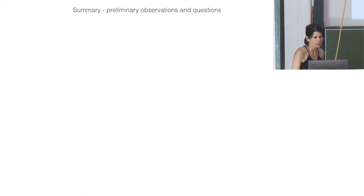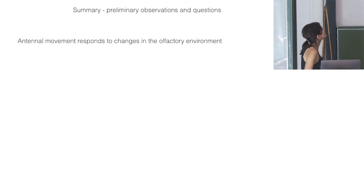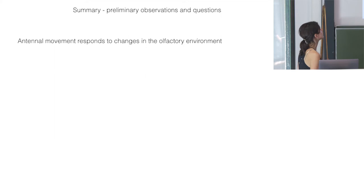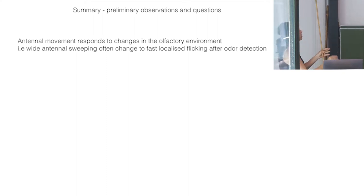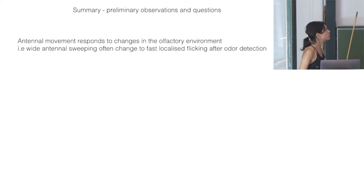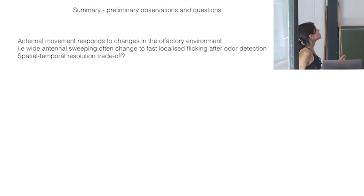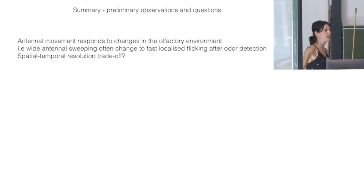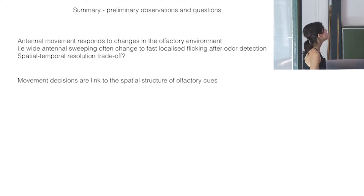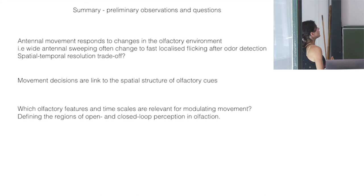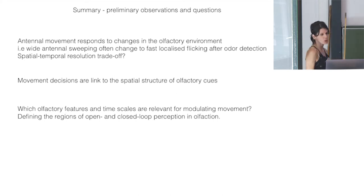This is all work in progress, but so far: antenna movement responds to changes in the olfactory environment. We see wide antenna sweeping shift to fast localized flicking after odor detection and after odor elimination — perhaps the animal scans until it detects an odor, then stays on that location with higher flicker activity to perceive it better. Movement decisions are linked to the spatial structure of olfactory cues, and we want to define which olfactory features and timescales are relevant for modulating movement and identify open versus closed loop regions of olfactory perception.